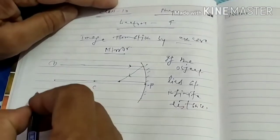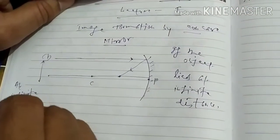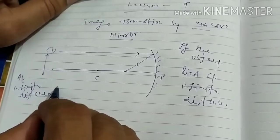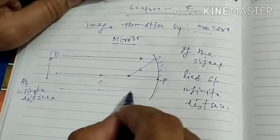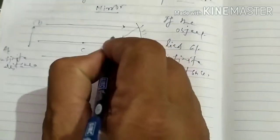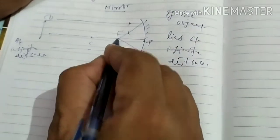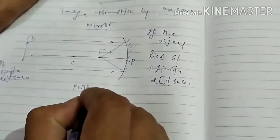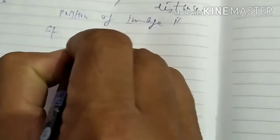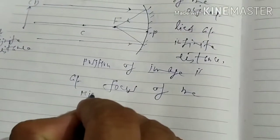If the object is at infinite distance, then the rays coming from this object after reflection from the concave mirror meet at a point on the principal axis, and this point is at the focus. So the position of the image is at F, that is at the focus of the mirror.